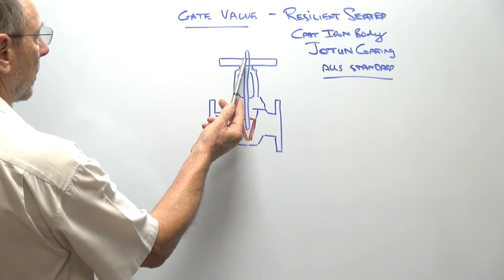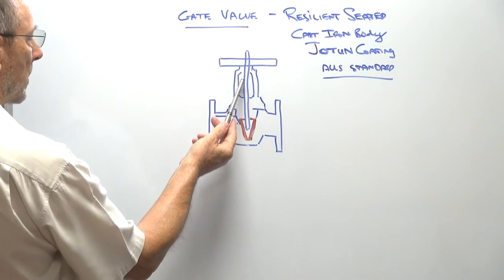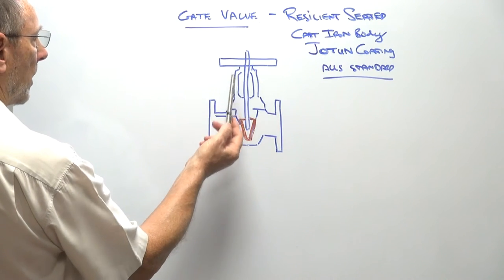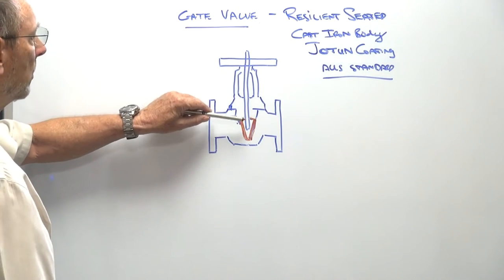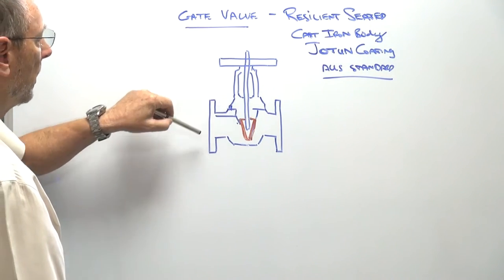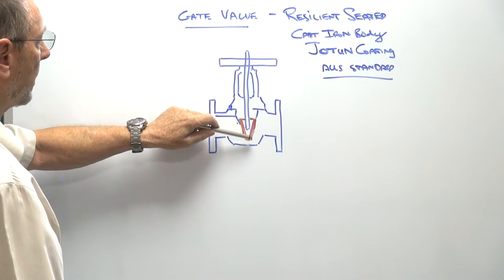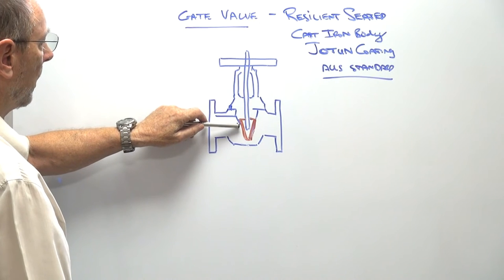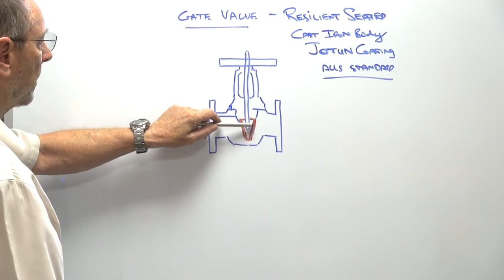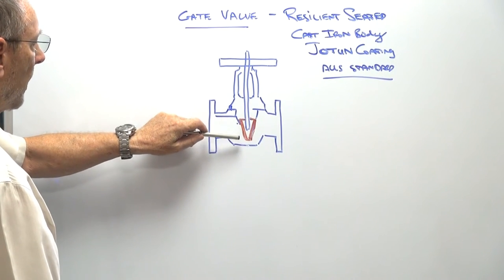As the unit rises up with its rising stem, you wind the handle around and the actual gate comes up, allowing the flow to go through. As you wind the handle down, this gate goes back into its cavity, and it's got the resilient rubber seating on the outside of it that makes a perfect seal.